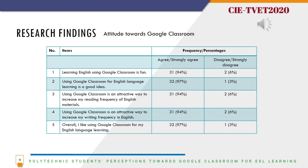The attitude towards Google Classroom. 97% of the students like to use Google Classroom for English language learning. 97% of the students agree that using Google Classroom for English language learning is a good idea. While 94% of the students agree that learning English using Google Classroom is fun, attractive to increase their reading frequency, and an attractive way to increase their writing frequency.